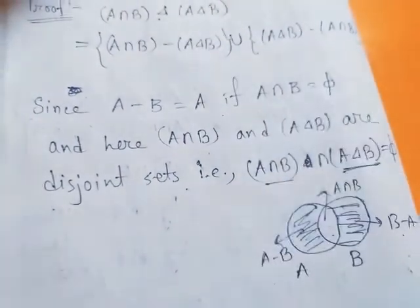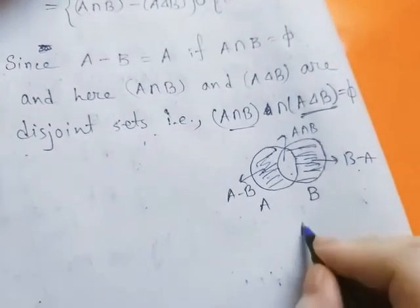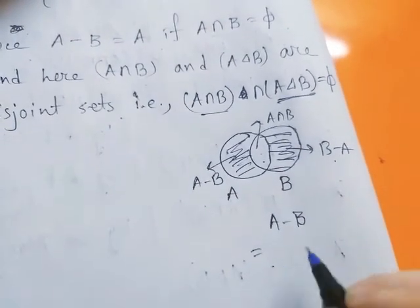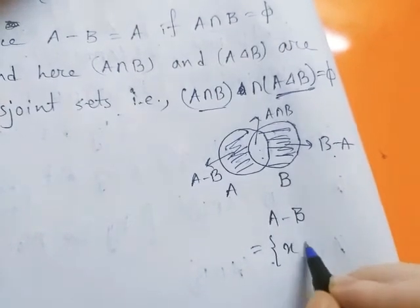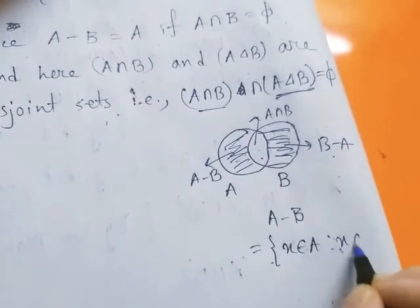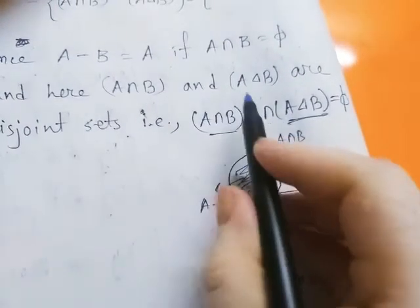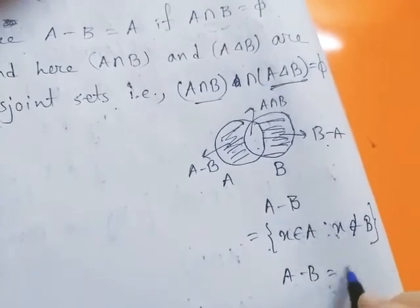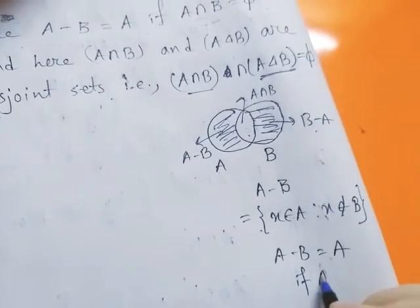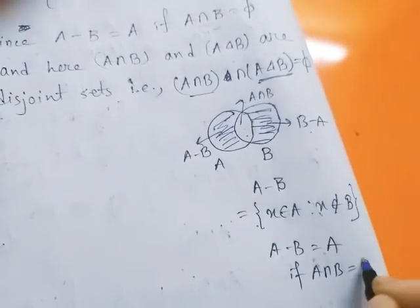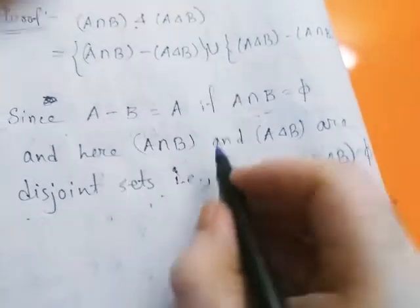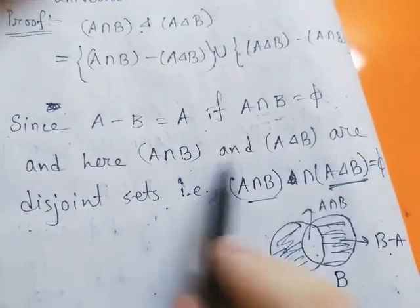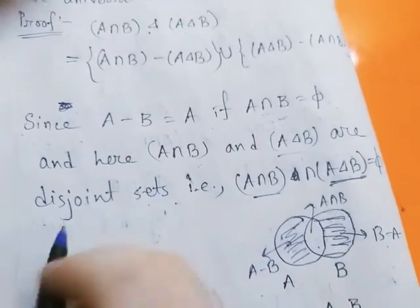Since A minus B equals A if A intersection B equals phi — from the definition of difference of two sets, A minus B is the set of x belonging to A such that x does not belong to B — and since these two sets have no common element, A minus B equals A when A intersection B equals phi. Since these two sets are disjoint, therefore: